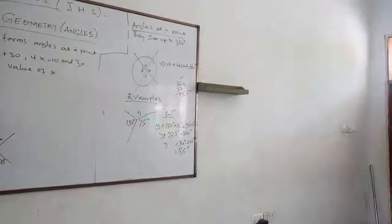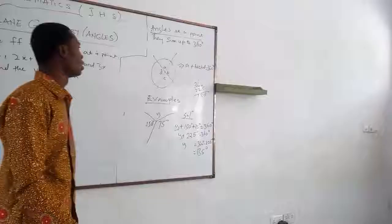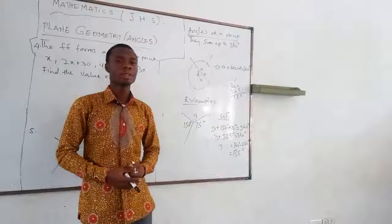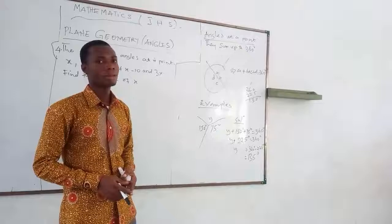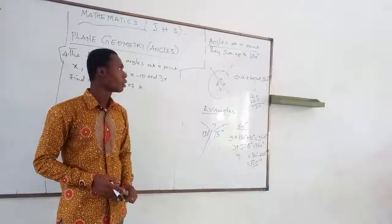Hello. Let's continue with angles at a point. In our previous lesson, we were discussing angles at a point. We want to review it and continue from there. We said that angles at a point sum up to 360 degrees.